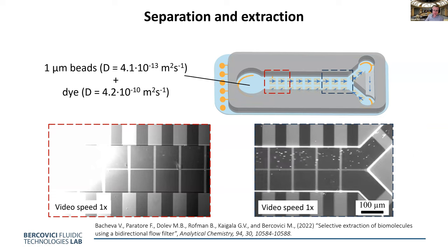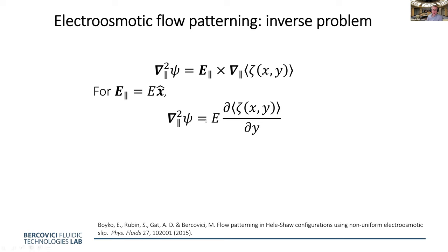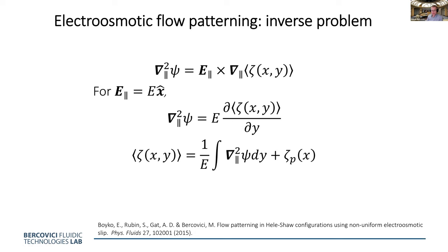Returning to our original desire to create arbitrary flows: recall the equation — the Laplacian of the stream function equals the electric field crossed with the gradient in zeta. For a unidirectional electric field in X, this simplifies to the electric field times the gradient of zeta in Y. This means you can solve a very simple inverse problem: if you want to know what zeta potential distribution is required to create a desired stream function, just integrate in Y and you have your zeta potential distribution.